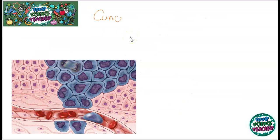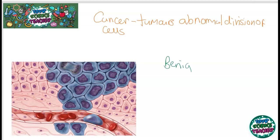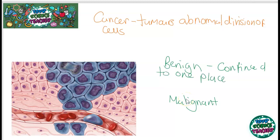Cancer is a disease that affects so many families around the world. Tumours can form through abnormal division of cells. There are two types of tumour: benign tumours and malignant tumours. Benign tumours are often easier to treat because they are confined to one place and don't move, meaning they can simply be removed through surgery. Malignant tumours, however, can move because they can infect the bloodstream and travel, meaning they can infect multiple organs.